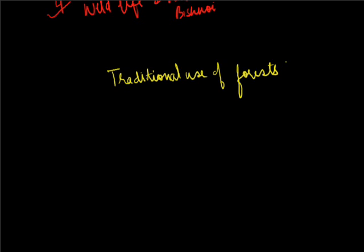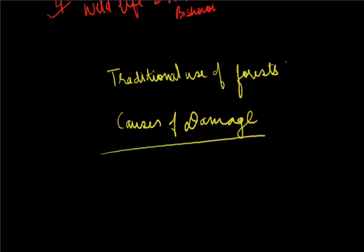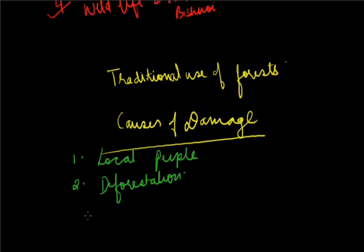Causes of damage to the forest: What are the various reasons behind this? The first reason is local people damage forests to fulfill their daily needs. Second is deforestation. And third reason can be tourists, for making arrangements for them forests are cleared.